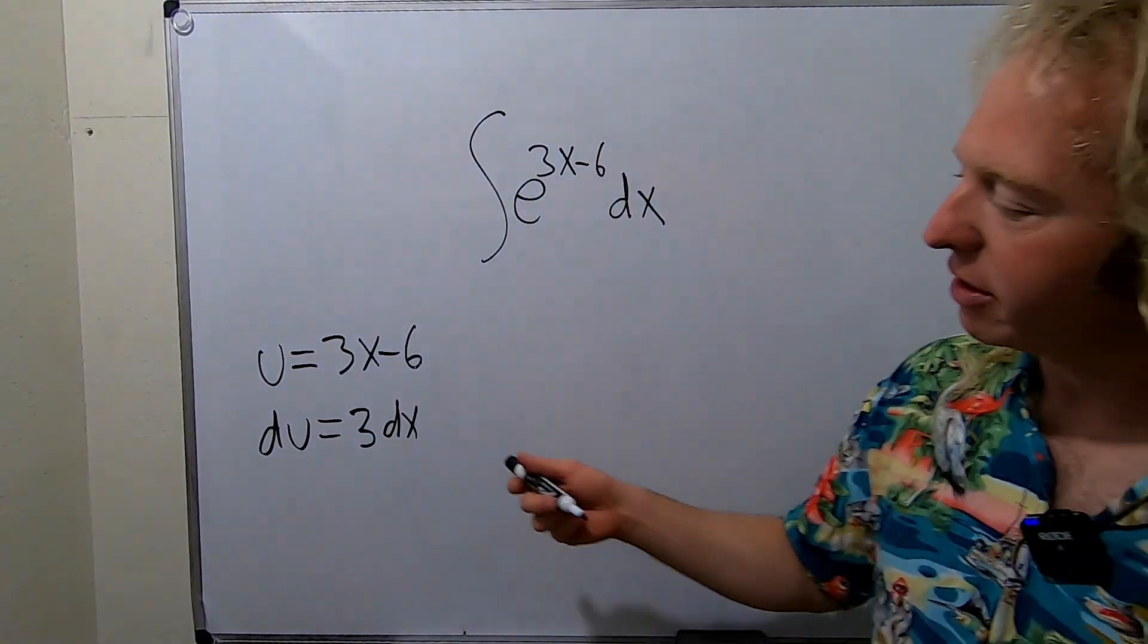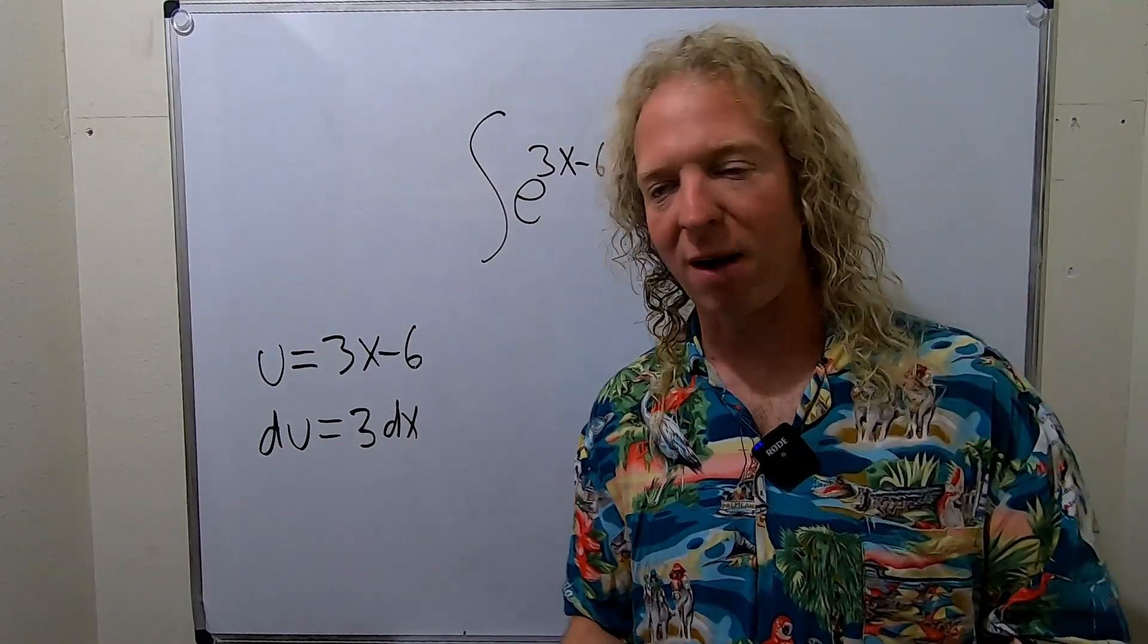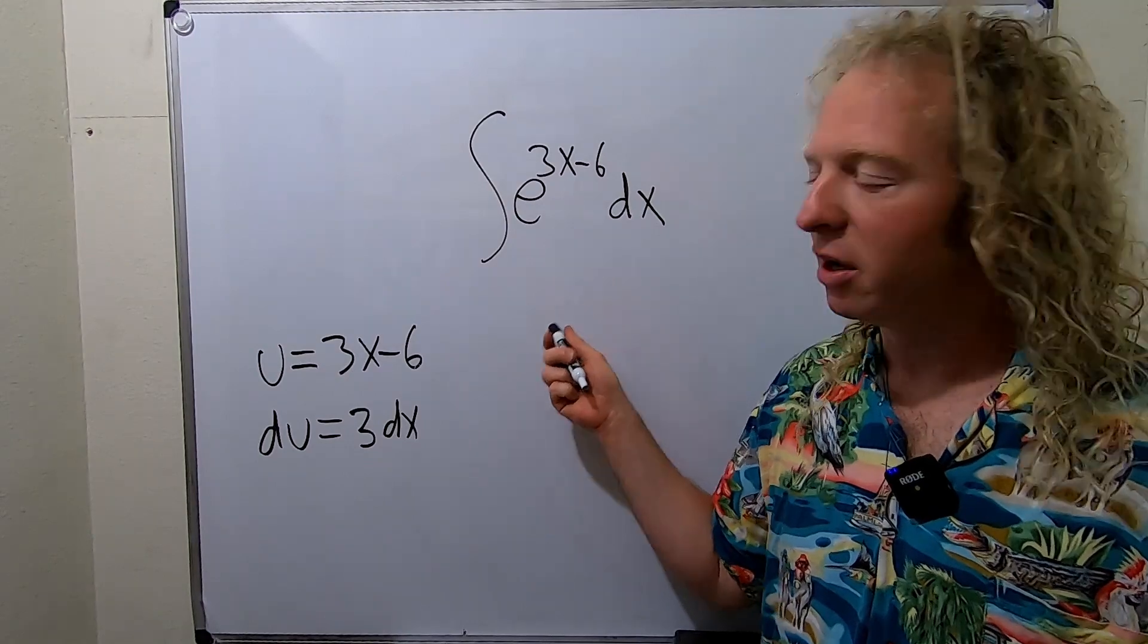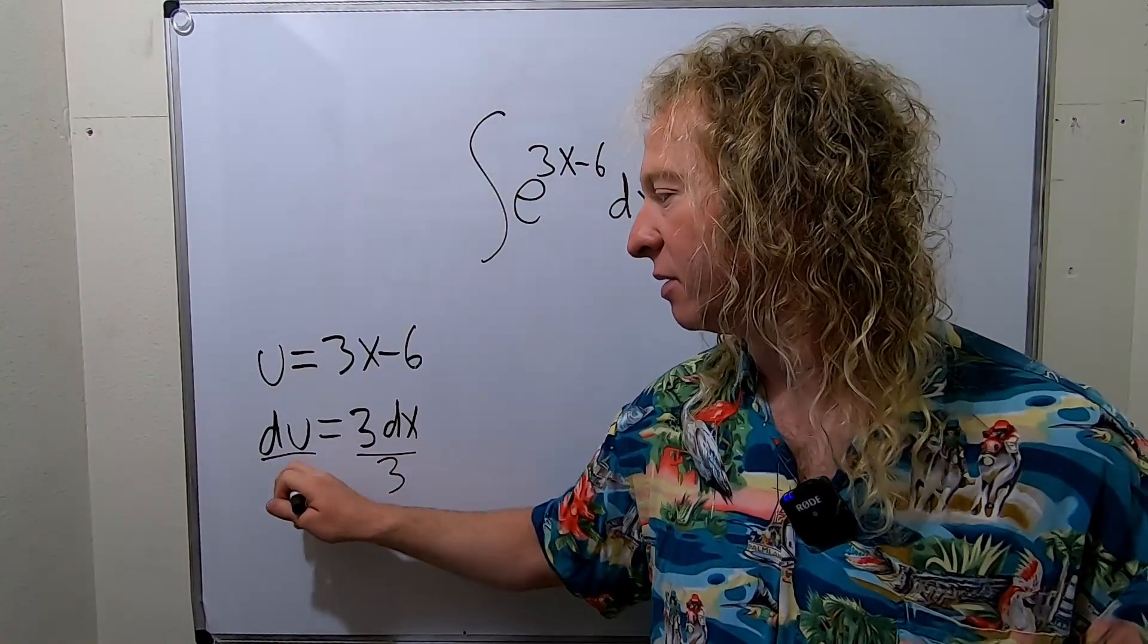So now we have to make this look like this. That's typically what you do in u substitution problems. So it looks like we have a 3 here and we don't have one here. So we'll divide both sides by 3.